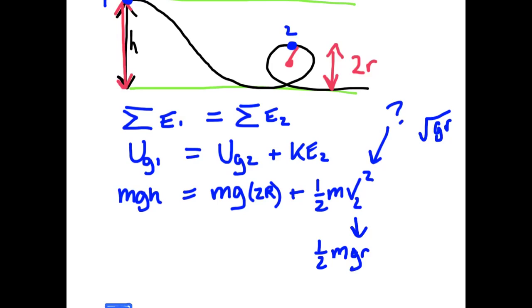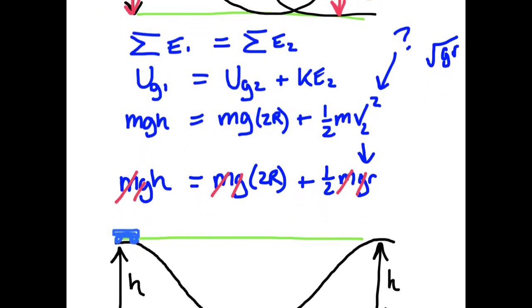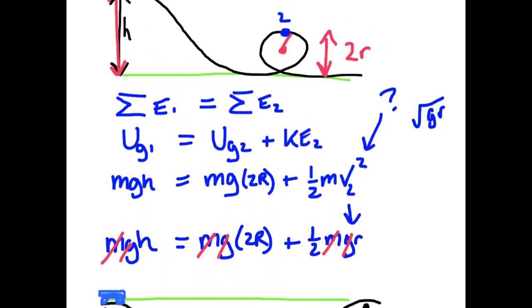So let's rewrite this entire line. mgh is equal to mg2r plus 1 half mgr. Now look at every single term. Every single term has an m and every single term has a g, so if we divide everything by mg, we're left with an expression for just h and r. So h has to equal 2.5r.